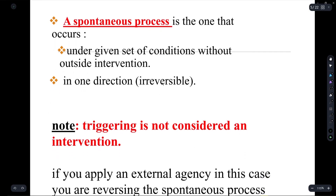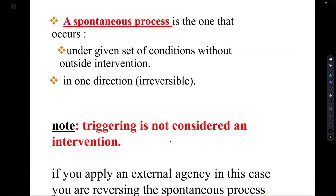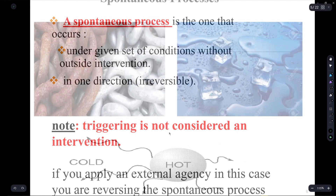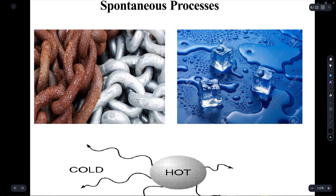A spontaneous process is characterized by two things: it continues going without any outside intervention, and it can only occur in one direction. Triggers are not considered intervention because they only start the reaction and don't follow the entire way through. Some examples include the rusting of iron, which is a chemical reaction that occurs without any outside intervention, and the melting of ice, which is a physical reaction that also occurs without any external intervention.